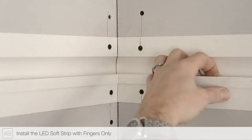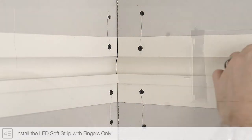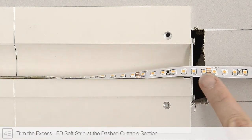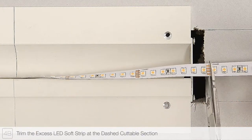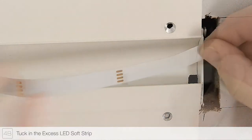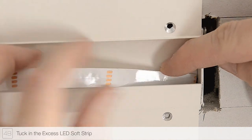Wrap strip around corners to ensure continuous illumination. Only use fingers to install the strip. Trim any excess soft strip along the dashed cutting lines. It is important to only trim the strip at these lines. Tuck any excess soft strip behind the drywall.